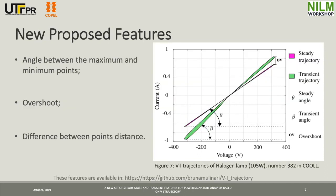In our work, we propose new features for the VI trajectory, and we use the VI curves obtained in transient state, which is one of the contributions of this work. The angle between the maximum and minimum points consists of obtaining these two angles. The feature overshoot consists in measuring the distance between the curves in steady state and transient state, using the difference between distances at minimum and maximum points — the difference between the two curves.